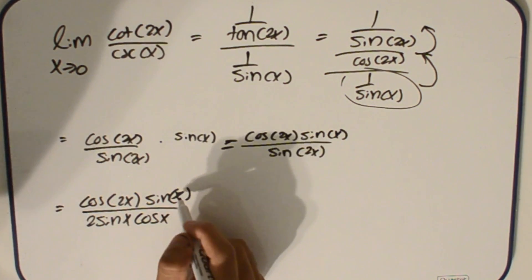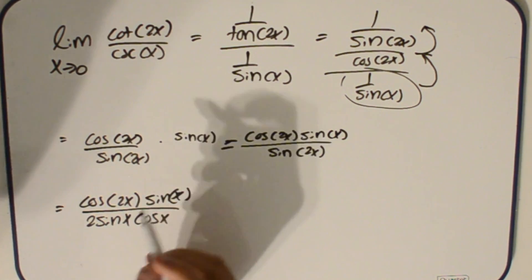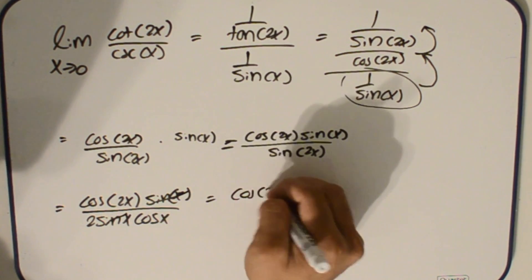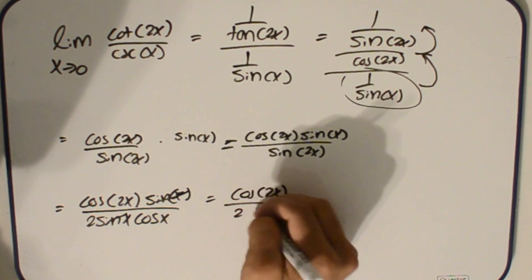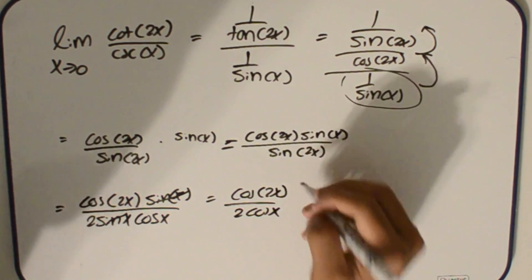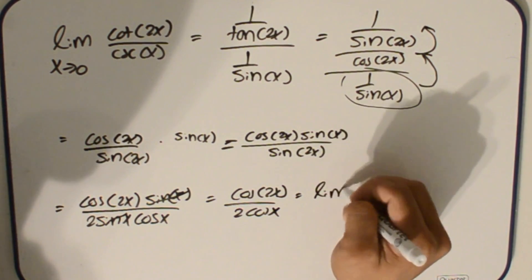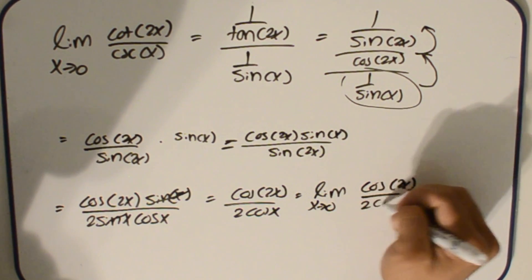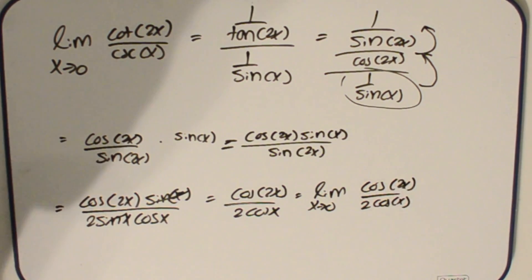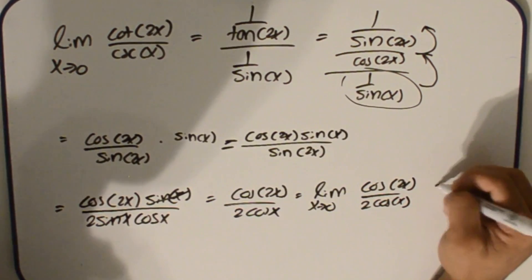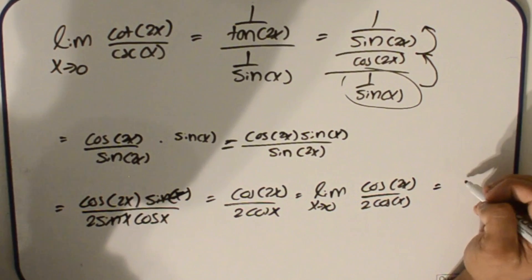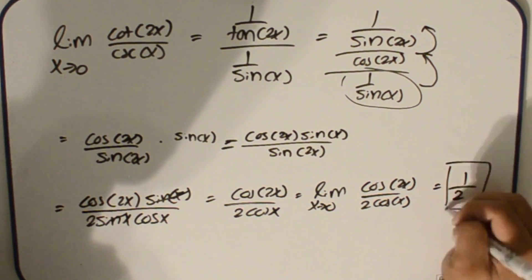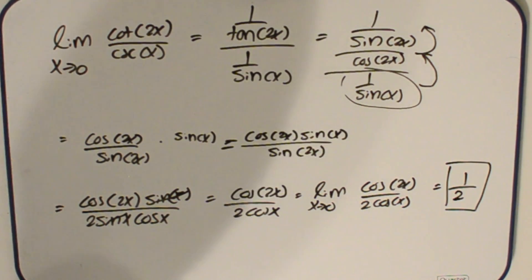At this point we're stuck — nothing cancels directly — so we think trig identity. We look at sine 2x in the denominator and apply the identity sine 2u equals 2 sine u cosine u, rewriting the expression as cosine 2x times sine x over 2 sine x cosine x. The sine x in the numerator and denominator cancel, leaving cosine 2x over 2 cosine x. Plugging in 0 gives cosine 0 over 2 times cosine 0, which is 1 over 2, so our answer is 1/2.